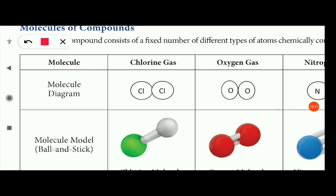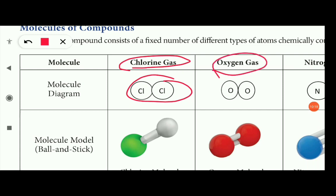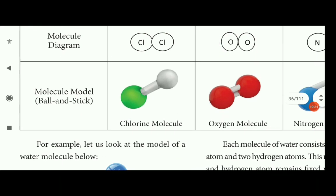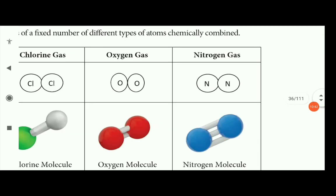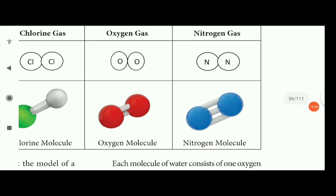Chlorine gas has two chlorine atoms joined together. Oxygen gas has two oxygen atoms joined together. Nitrogen gas — nitrogen has a triple bond.